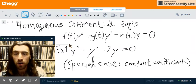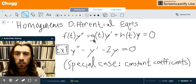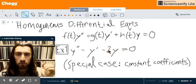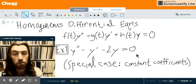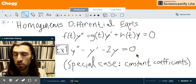For example, here f of t is equal to one, g of t is equal to negative one, and h of t is equal to negative two. And, as you'll see on the right, we have zero, making it a homogeneous equation.